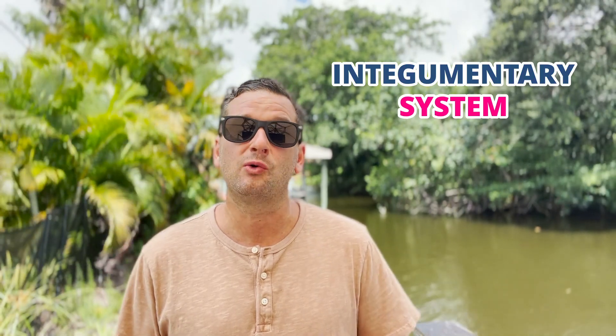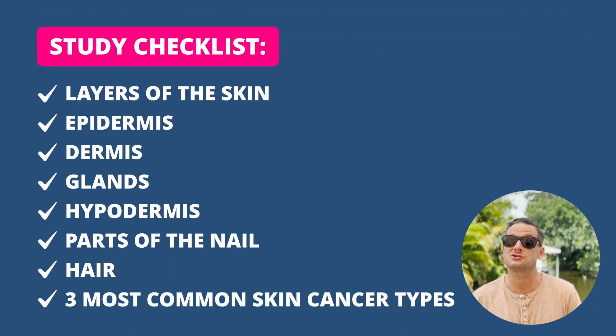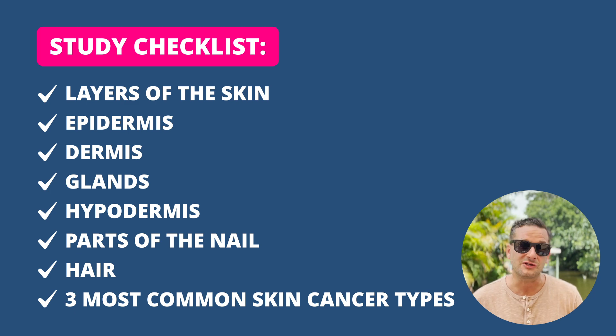The integumentary system is the last subject within the support and movement topic of A&P. It's a body system comprised of the skin and accessory structures including hair, sebaceous and sweat glands, and nails. This system protects the body, maintains homeostasis, and provides sensory information about the external environment. You'll be expected to know the layers of the epidermis, the hypodermis, and the various types of glands.